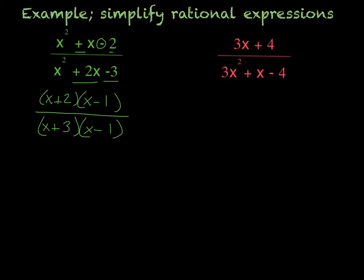So now we can simplify. Because I have everything multiplied together or divided, I can cancel out over the fraction bar. So the x minus 1 can cancel out with the x minus 1, leaving me with a final answer of x plus 2 over x plus 3.